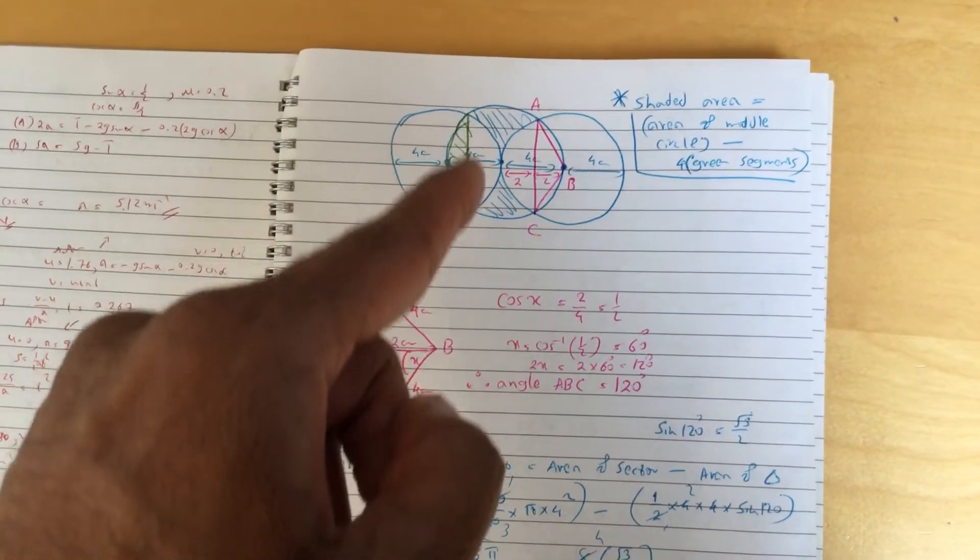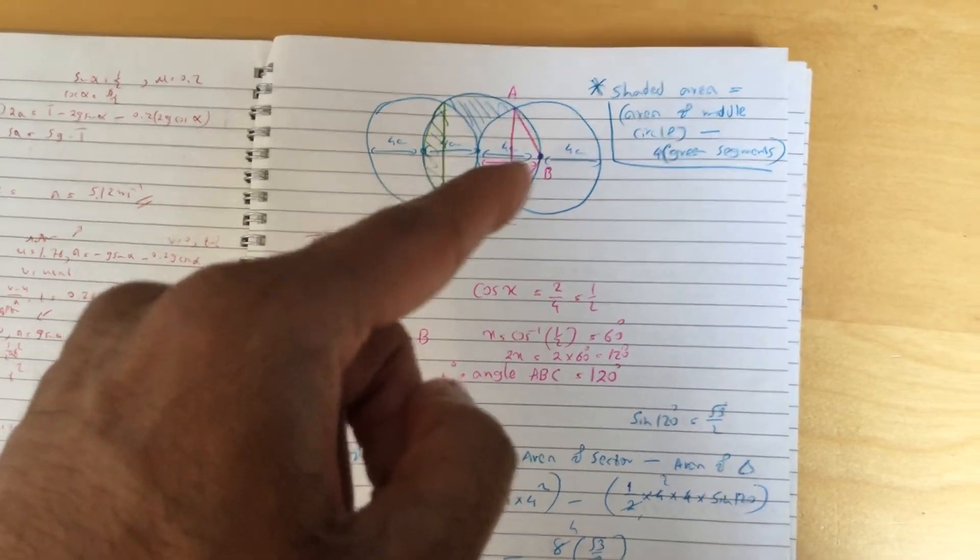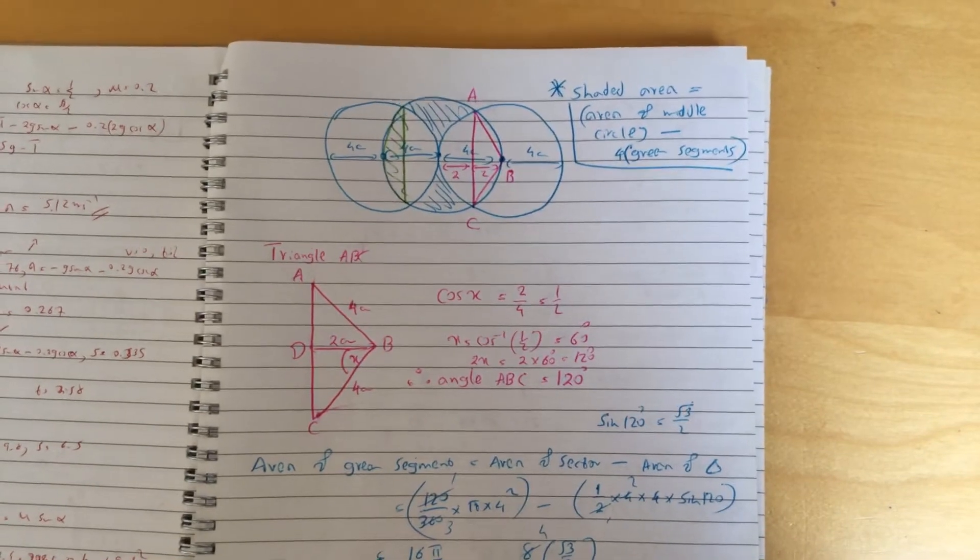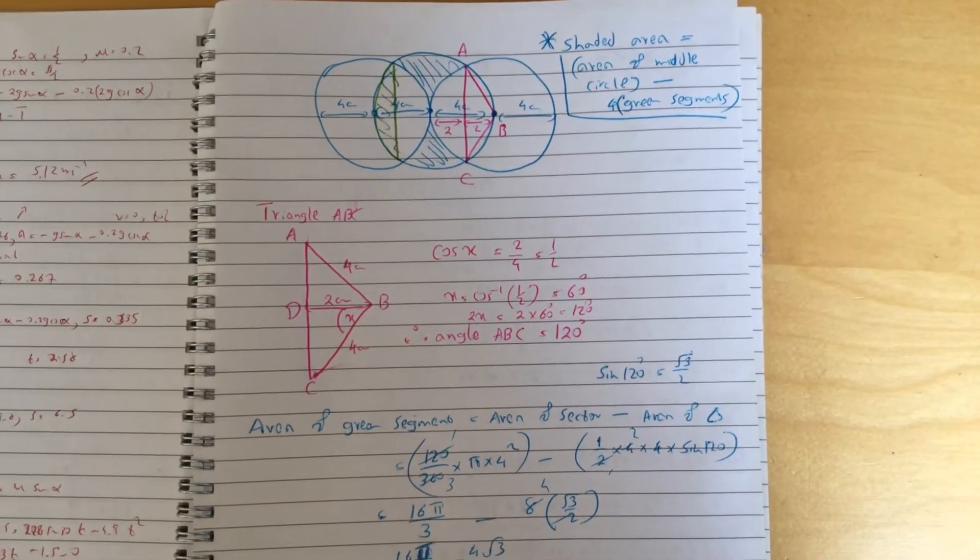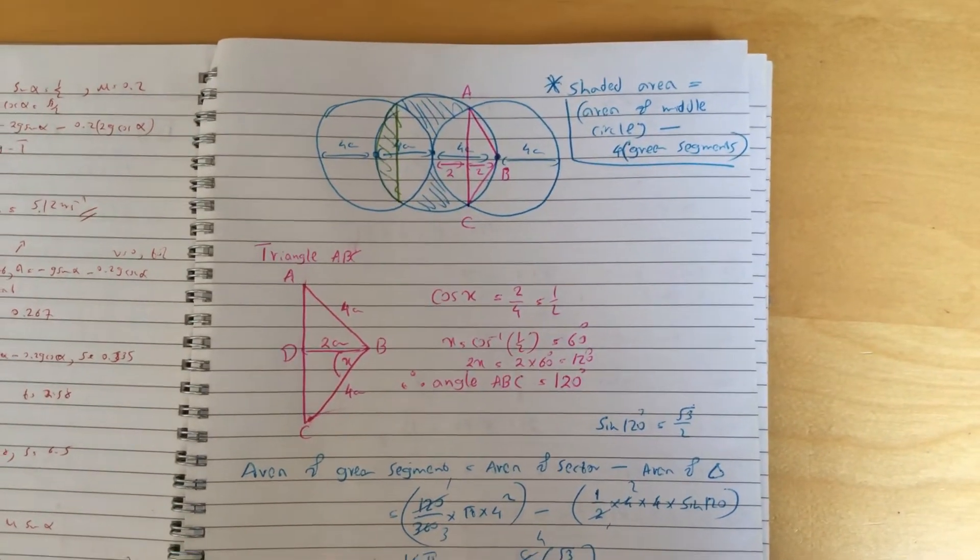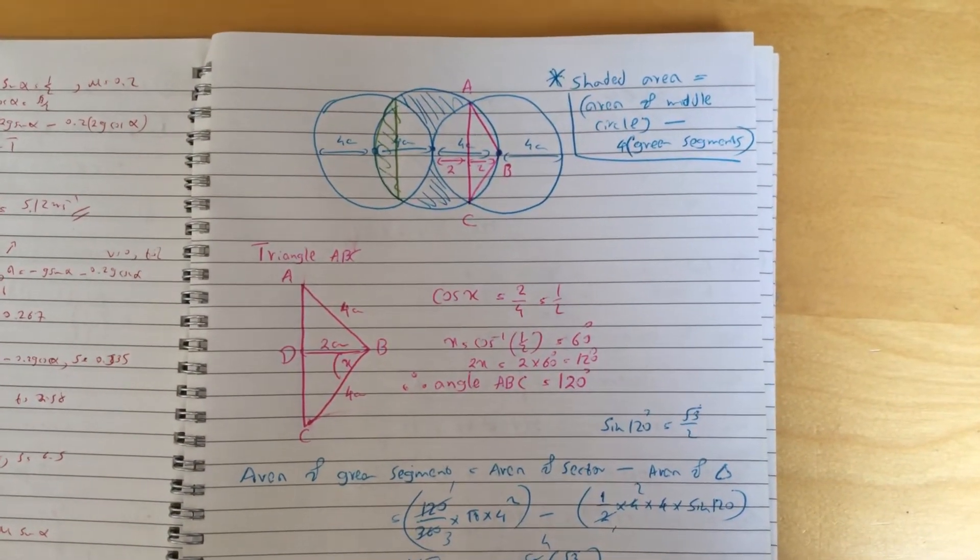What I did is I concentrated on this middle circle. If you look at it, these little white sections missing are four sets of these green segments. I'm not going to go through this again, but you can go to my earlier videos and look at the explanation.